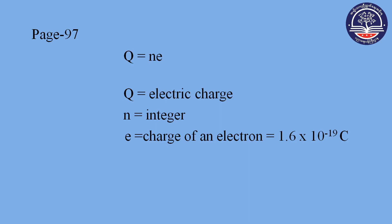Now let us look at the electric charge of an electron. The formula is Q equals nE, where Q is the total electric charge, n is an integer (1, 2, 3, 4, 5...), and E is the elementary charge.